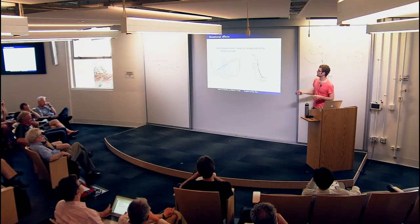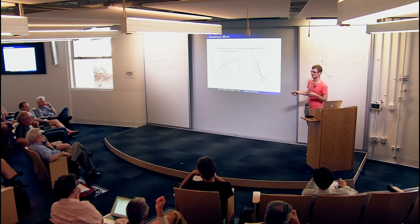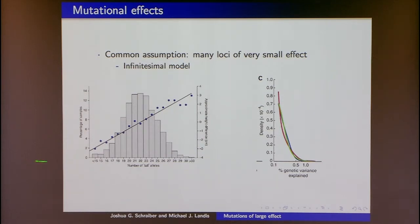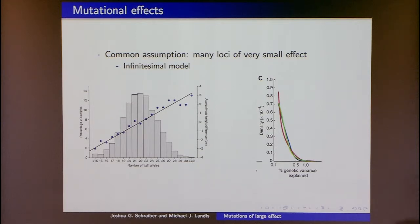There's the question of what mutational effects look like. The common model is the infinitesimal model. This figure from a human-height GWAS shows that as you increase the number of plus alleles an individual has, you also increase their height, and the increases are basically small. Another paper tried to estimate the distribution of effects from various GWAS hits, and the inferred distribution across all causative loci shows effects are very small and quickly tail out — that's the traditional model.